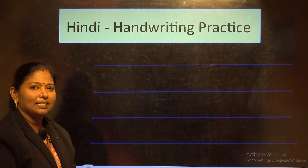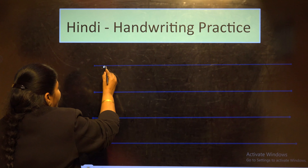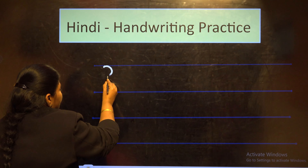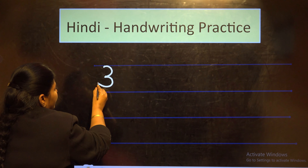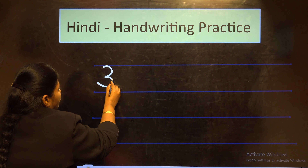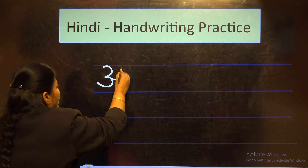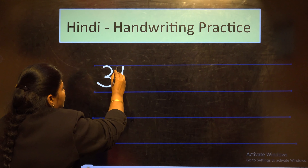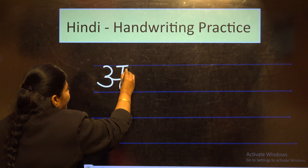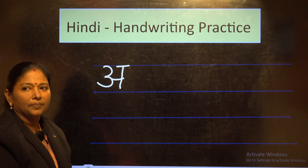The first letter in Svar is A. Draw a half curve, again one half curve from the vigil. Draw one sleeping line, one standing line, again one small sleeping line on the top and it becomes the letter A.